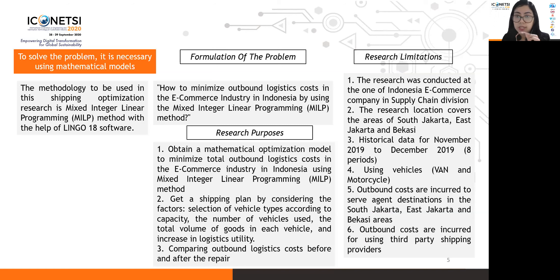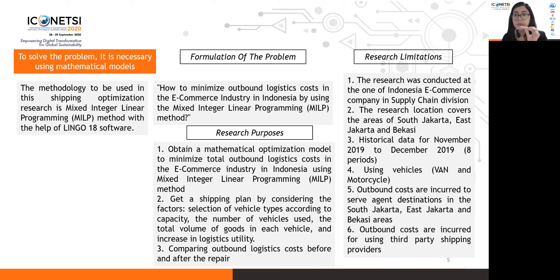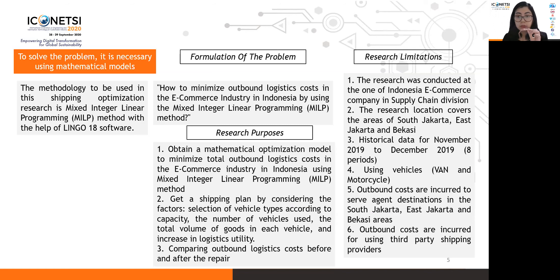The research limitations are: first, the study is conducted in one Indonesian e-commerce company's supply chain division. Second, the research locations cover the areas of South Jakarta, Jakarta, West Jakarta, and Bekasi. Historical data used spans from November 2019 to December 2019, covering eight periods. Vehicles used include vans and motorcycles. Outbound logistics costs cover agents around the South Jakarta, West Jakarta, and Bekasi areas, and the outbound costs are incurred for using third-party shipping providers.